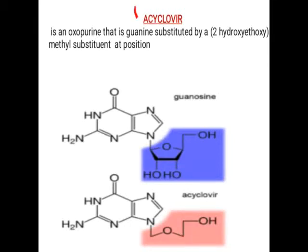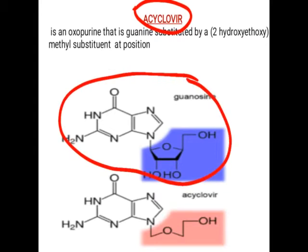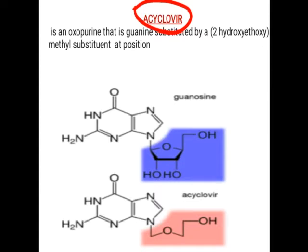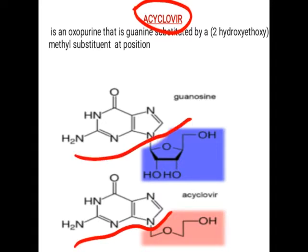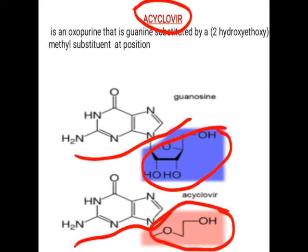Acyclovir is an oxopurine that is guanine substituted by a 2-hydroxyethoxymethyl substitution. This is the structure of guanine, and together with the sugar part they are called guanosine. In acyclovir, the structure up to the guanine part is similar to guanosine, but instead of the sugar, it consists of a hydroxyethoxymethyl substitution — that is the key difference.